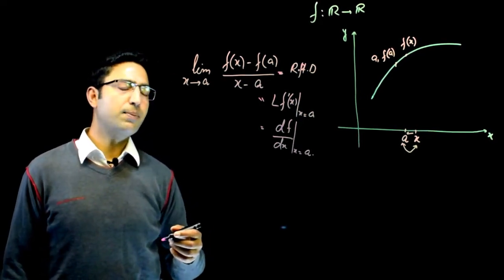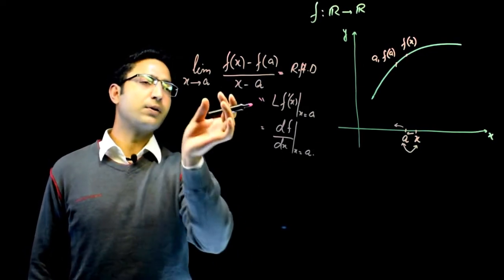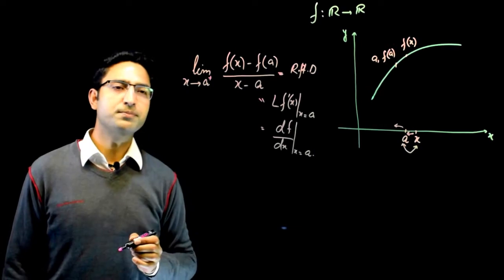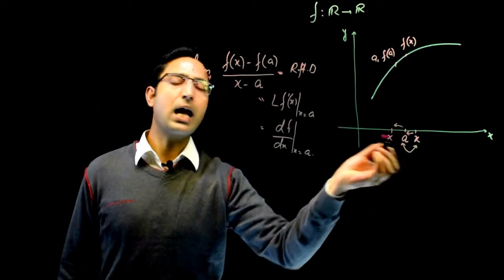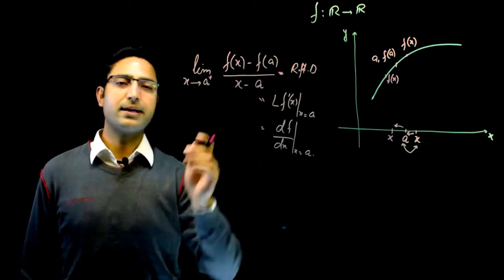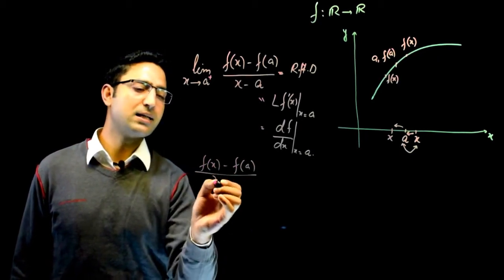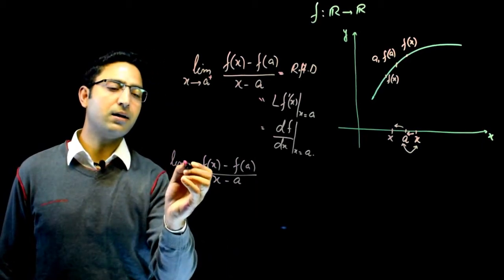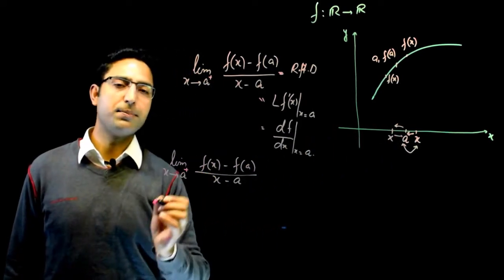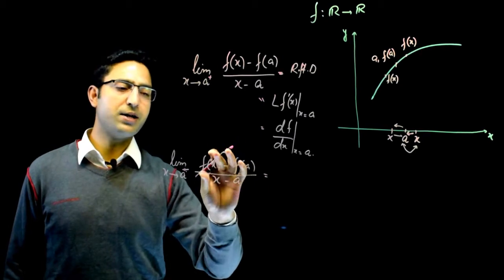Similarly, if I take x values to the left of a and look at the function values f(x), I do the same thing: I look at f(x) minus f(a) and divide by x minus a, and take the limit as x tends to a from the left (x → a⁻). This limit, if it exists finitely, gives the rate of change of f with respect to x whenever the change in x is very small.